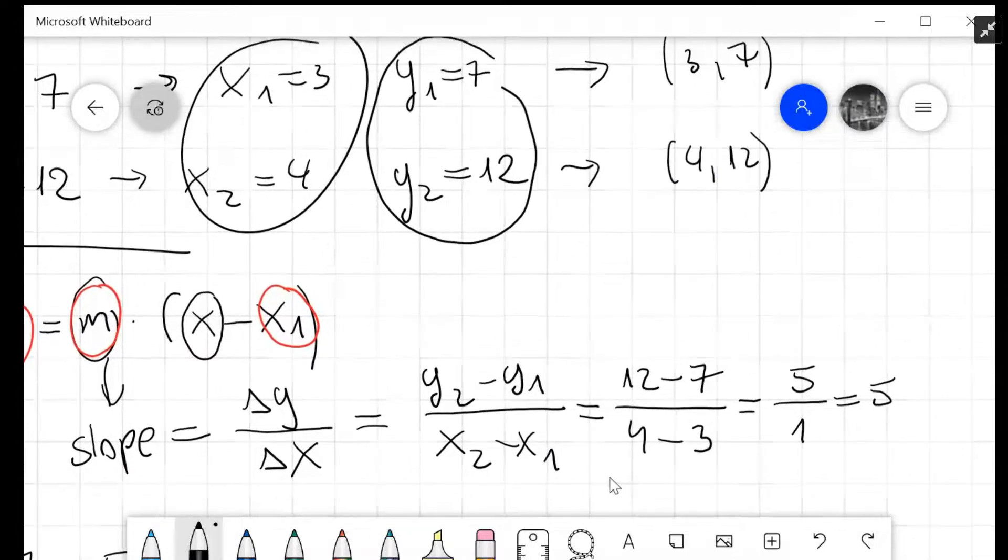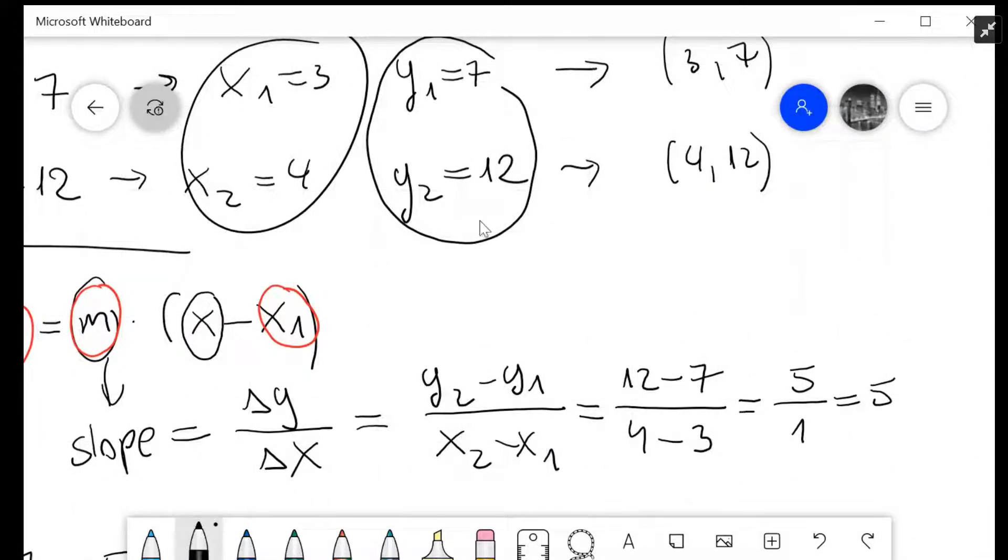We'll substitute the data. So y₂ is 12 minus y₁ which is 7, divided by x₂ which is 4 minus x₁ which is 3. Be careful not to put wrong numbers. This gives us a slope of 5.